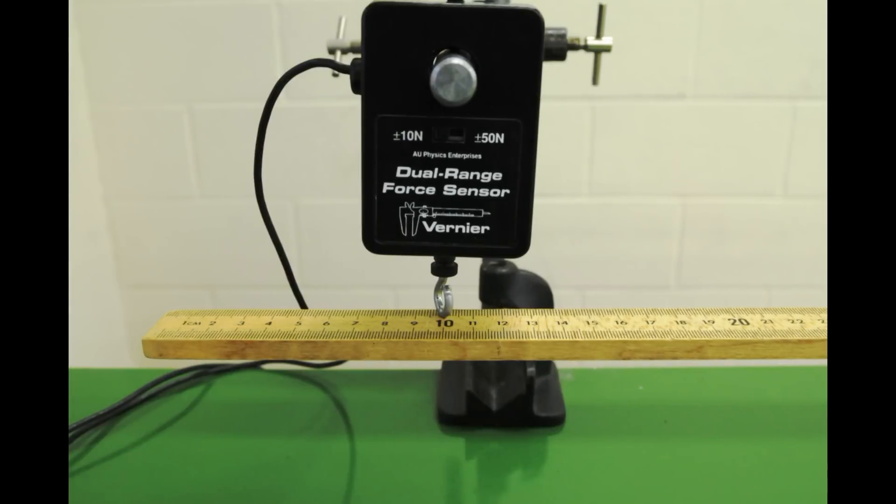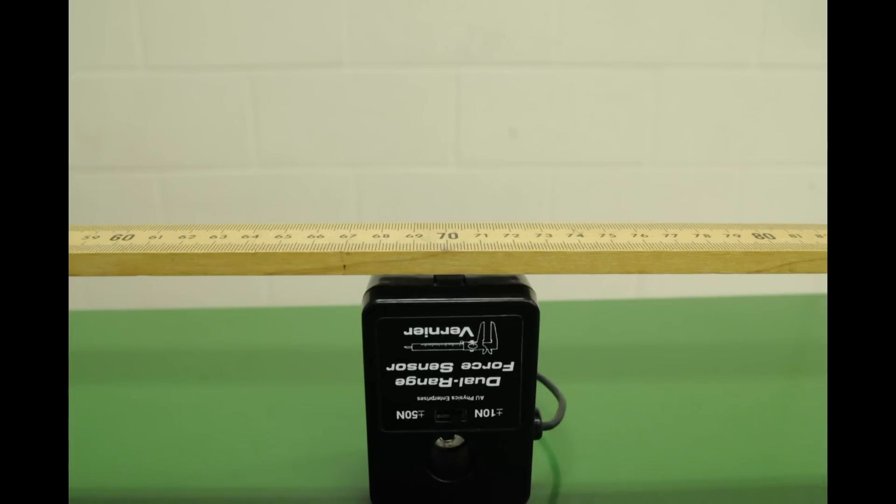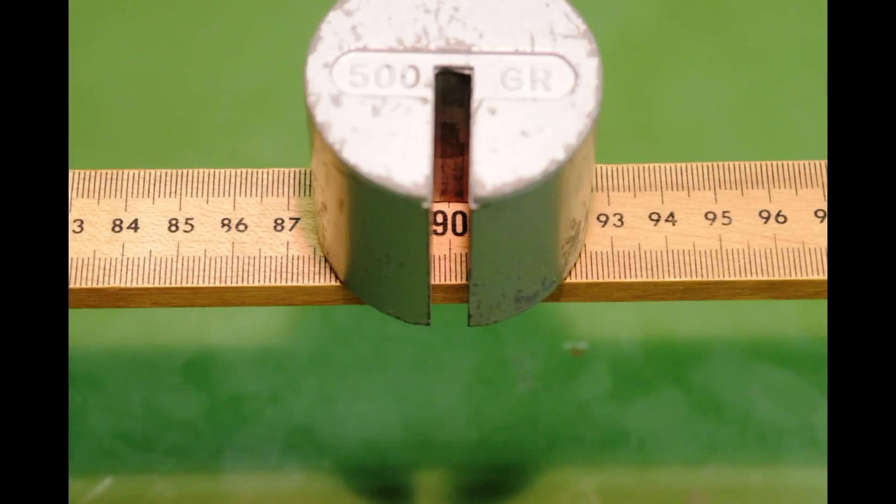Place the first force sensor at the 10 centimeter mark, the second sensor at the 70 centimeter mark, and the load at the 90 centimeter mark. Check to see that the sum of forces and torques are zero.